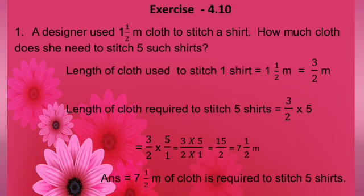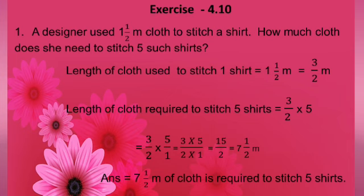Let us go on to the statement sums in exercise 4.10. A designer used 1 and a half meters of cloth to stitch a shirt. How much cloth is needed to stitch 5 such shirts? The length of cloth used for 1 shirt is 1 and a half meters, which as an improper fraction is 3 by 2. The length for 5 shirts is 3 by 2 into 5, giving 3 into 5 by 2 into 1 equals 15 by 2, which is 7 and a half meters.